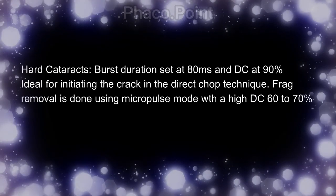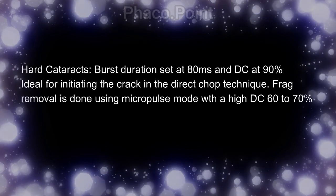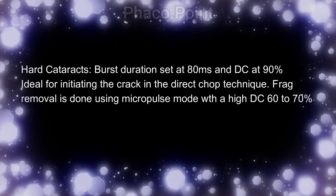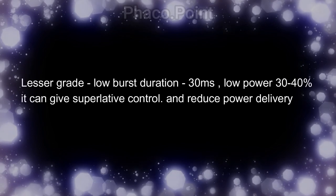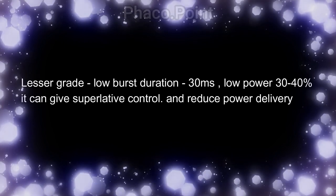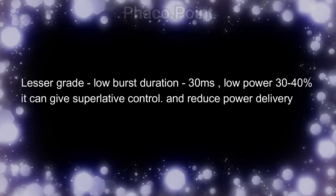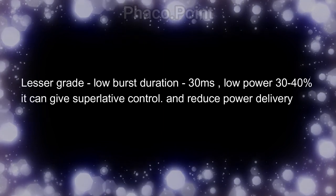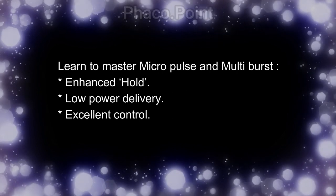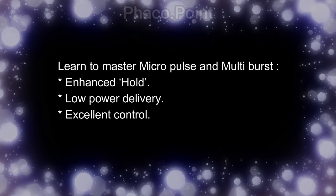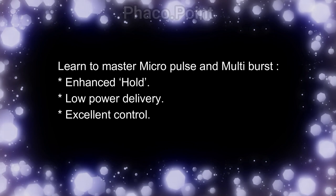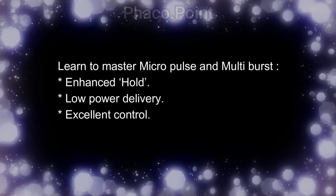In a hard cataract, I usually use burst mode with the duration set at 80 milliseconds and the duty cycle set at 90%. This helps me to impale the hard nucleus and to initiate the crack. Because the burst mode gives much better control with foot pedal movement, there is a trend among surgeons to use it even in softer cataracts like grade 2 to grade 3, having set a low burst duration and low power. The multi-burst and micropulse modes help to not only conserve FACO energy but also enhance the holding power of the FACO tip, and both come with the possibility of applying various modifications in the settings.